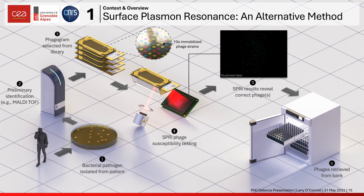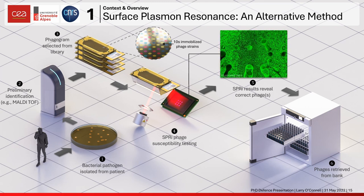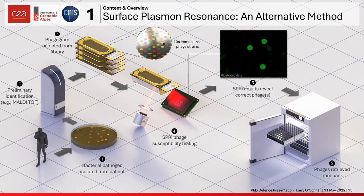We run the SPR assay, and based on the sensor response we can select from a bank of phages and administer them to the patient much more quickly than before. For example, these three phages could be selected from the phage bank and administered to the patient to cure them of the bacteria making them sick.